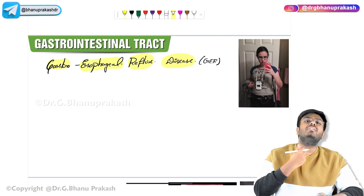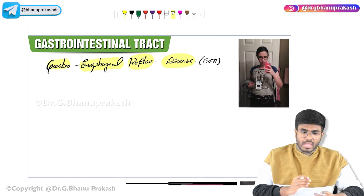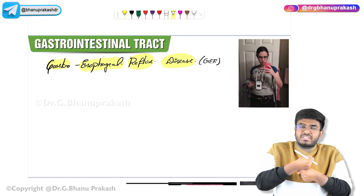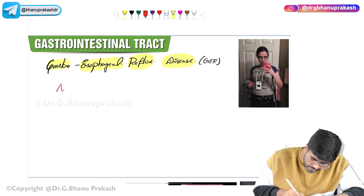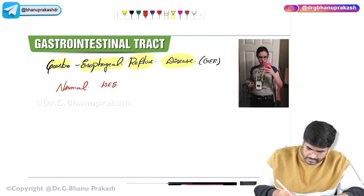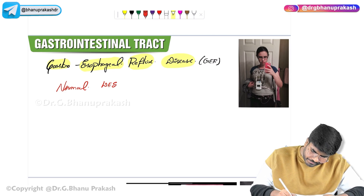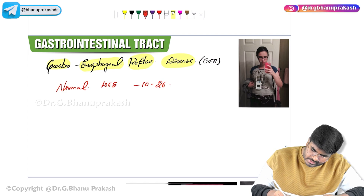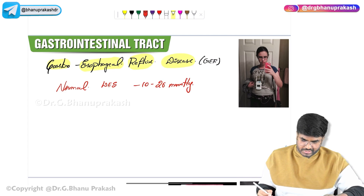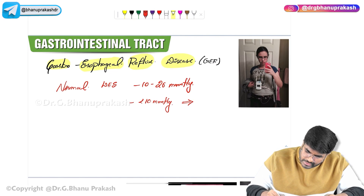Why does GERD happen? Normally, between the esophagus and the stomach there is a lower esophageal sphincter. The normal pressure in the lower esophageal sphincter is 10 to 26 mmHg. If the pressure falls to less than 10 mmHg, that can cause gastroesophageal reflux disease.